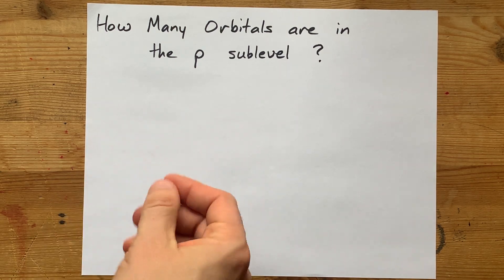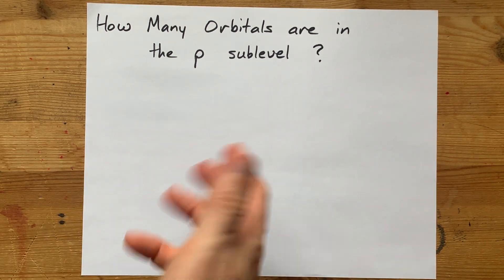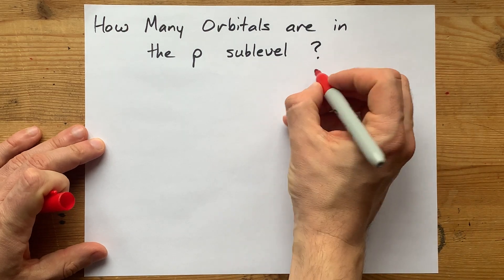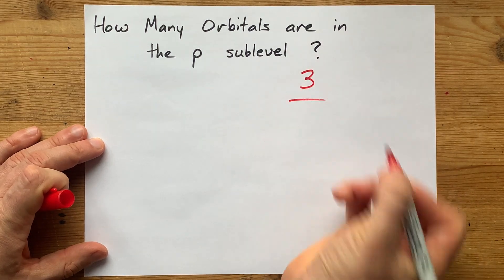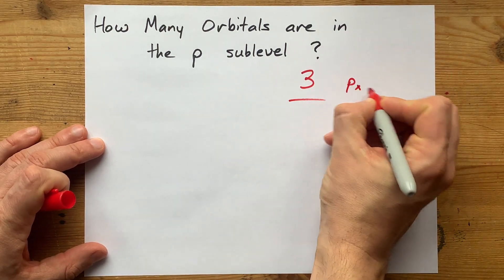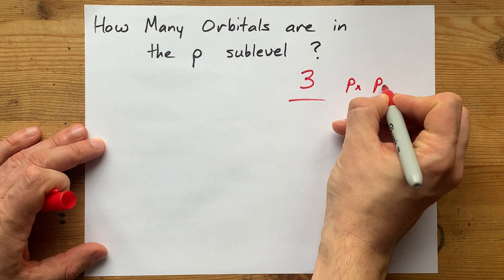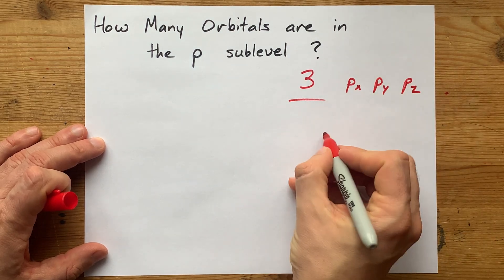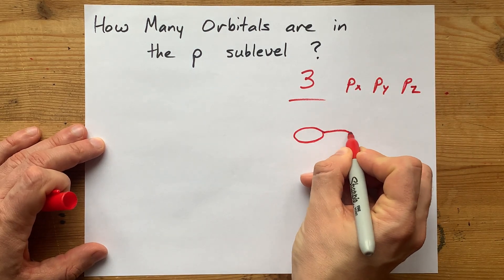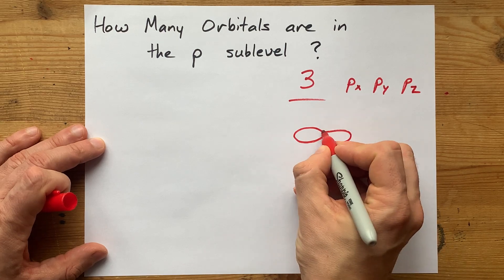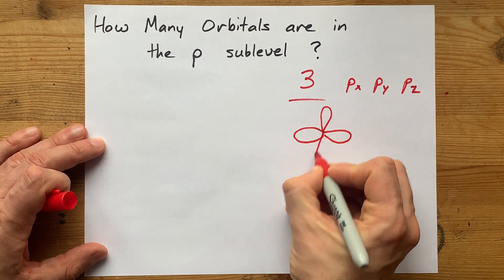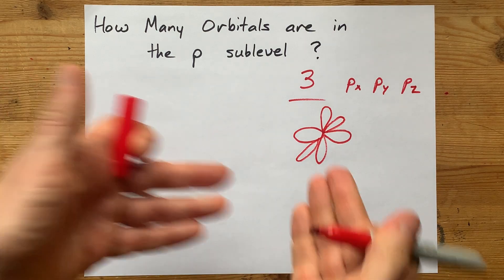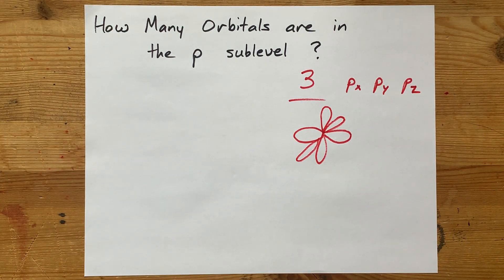How many orbitals are in the p sub-level? Well, to be completely honest, most chemists have just memorized that it's three. Those orbitals end up being called px, py, and pz because they are little peanut-shaped things that go on the x-axis, the y-axis, and one coming out at you on the z-axis. Those shapes ring a bell? Sure they do.